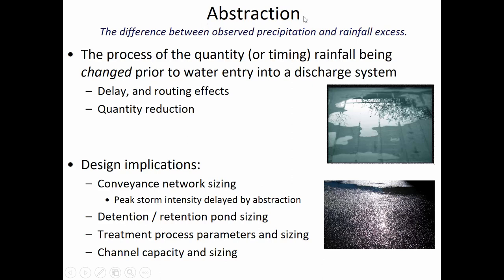We like abstraction — if we're trying to decrease peak flows, if there's some way to maximize abstraction, let's do it. If we can make concrete more rough instead of smooth, not only does that improve traction but it may also improve abstraction. Being able to quantify these abstractions, when it comes to design, is going to affect how big the pipes need to be to convey peak storms, the sizing of ponds, and what kind of treatment process we need. Rainfall excess is precipitation minus abstraction.